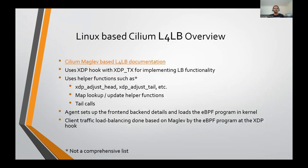To give a quick overview of the Linux-based Cilium L4LB solution: it uses an XDP hook with XDP-TX action to implement the LB functionality. XDP-TX is one of the actions supported by the XDP hook, which hairpins the packet out of the NIC on which it arrives. The Cilium XDP program also uses helper functions such as XDP adjust head, adjust tail, map lookup and update helper functions, and it uses tail calls.